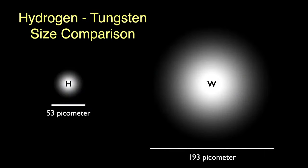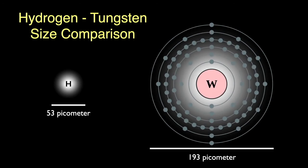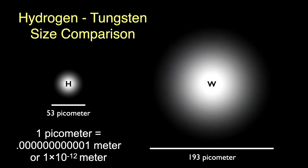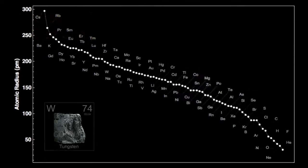If we compare the size of the tungsten atom to that of hydrogen, the tungsten atom is about 3.6 times the size of hydrogen. Here's its electronic structure — a picometer is a trillionth of a meter, so atoms are impressively small. Looking at all the element atom sizes sorted from largest — cesium at the top left — to smallest — helium on the bottom right — tungsten has the 25th largest atom of the elements.